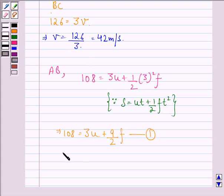And we have 42 equals u plus 3f, because v equals u plus ft where time is 3 seconds. V we have found was 42 meters per second.